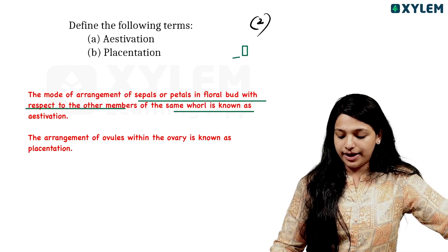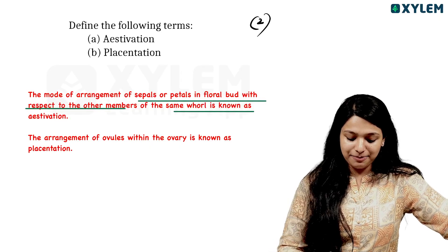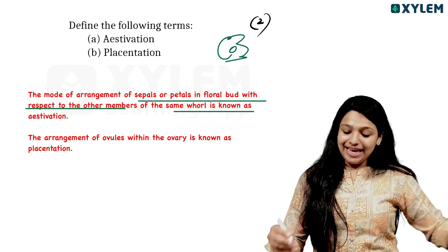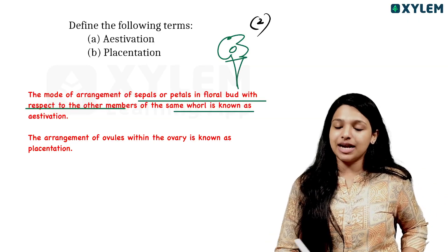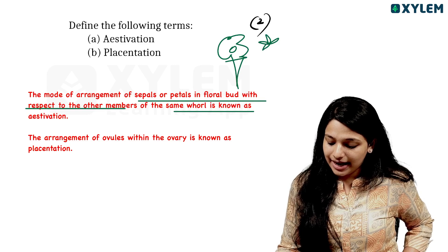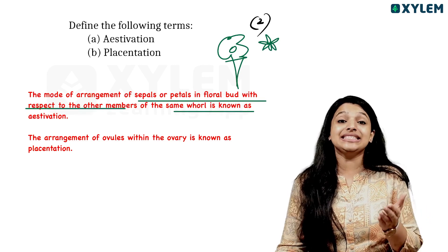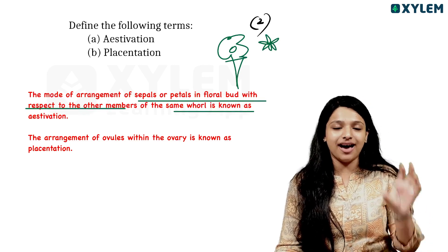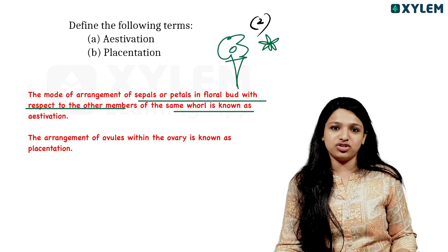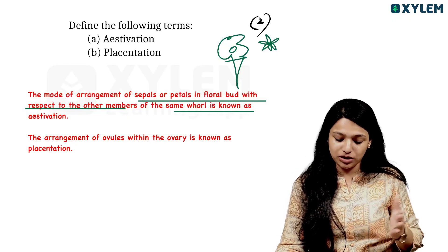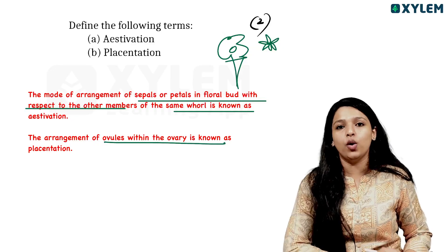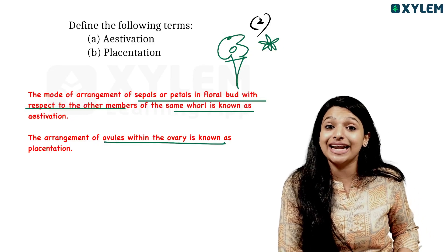We will consider a flower at the budding stage and look at how the petals are arranged. That arrangement of petals or sepals in the floral bud is Aestivation. Placentation is the arrangement of ovules in the ovary.